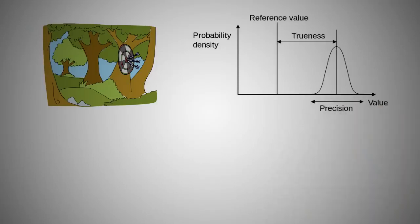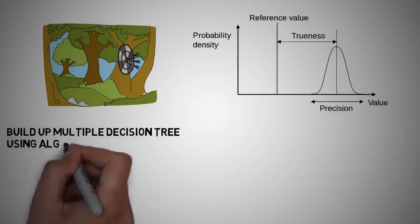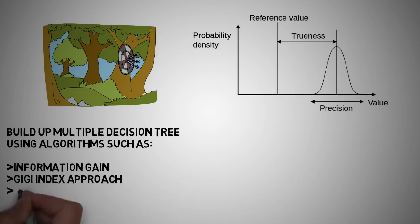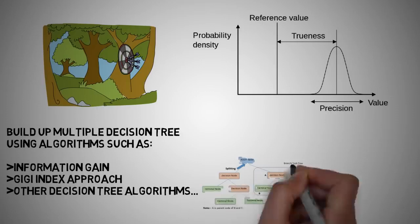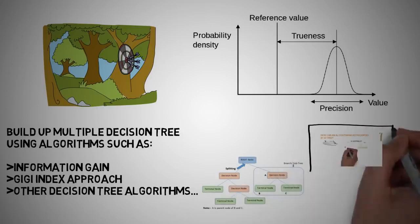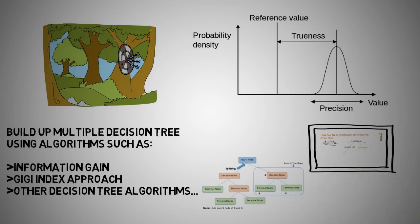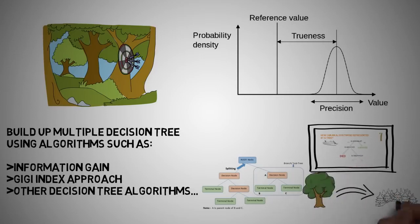To model multiple decision trees to create the forest, you are going to use the same method of constructing the decision tree with the information gain or Gini index approach amongst other algorithms. If you are not aware of the concepts of the decision tree classifier, please check out my other lecture on decision tree CART for machine learning. You will need to know how the decision tree classifier works before you can learn the working nature of the random forest algorithm.